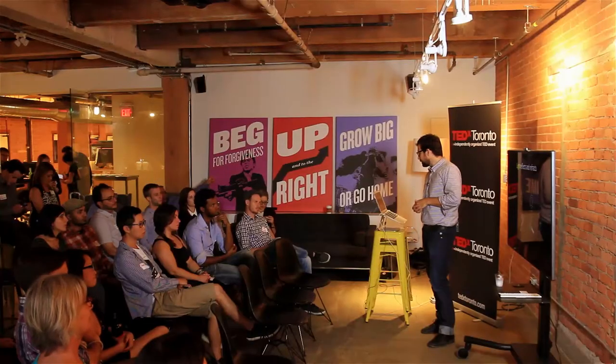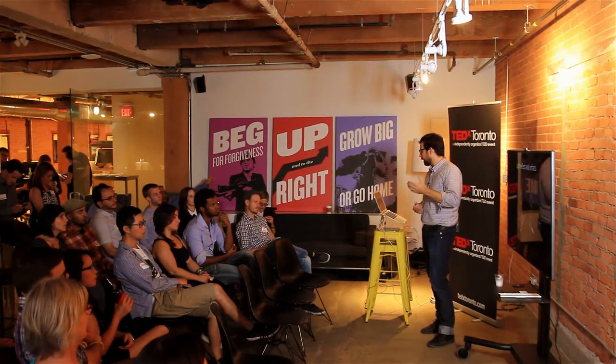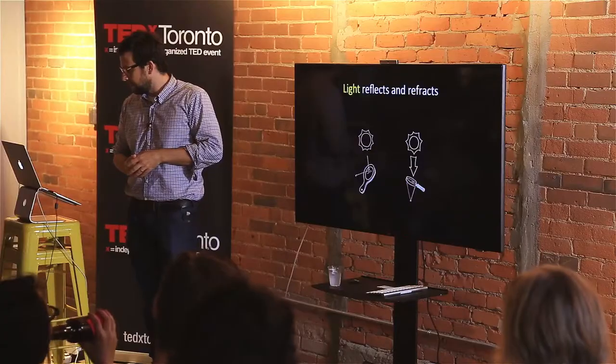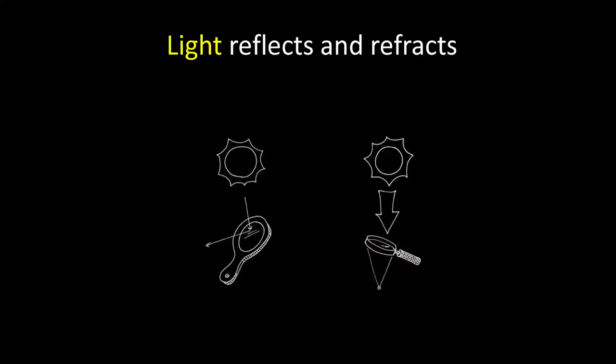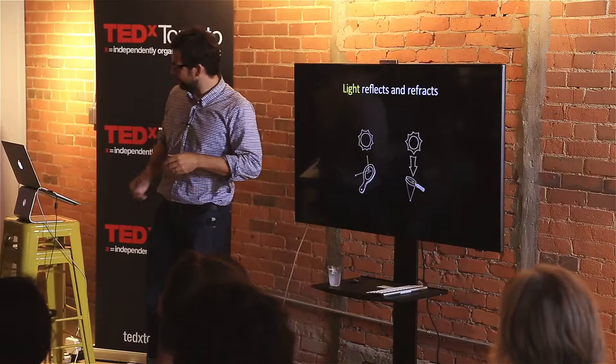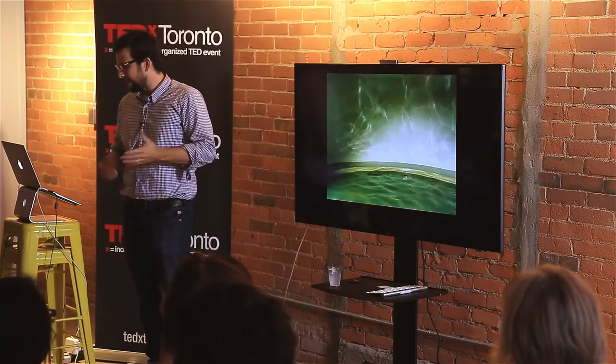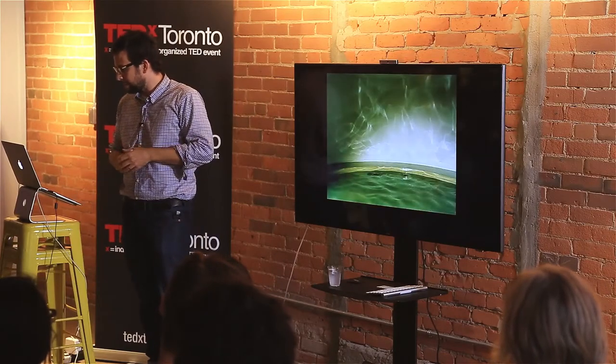The second principle I'd like to talk about is that light reflects and light refracts. Light bounces off some surfaces and will also distort through and off imperfect surfaces and materials. A great example of this is light reflecting and refracting off of a water surface.